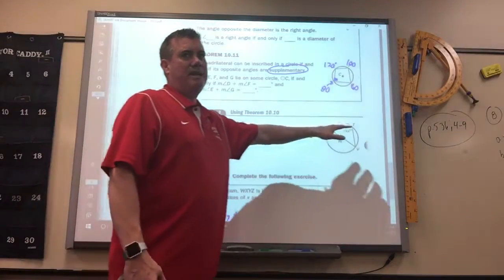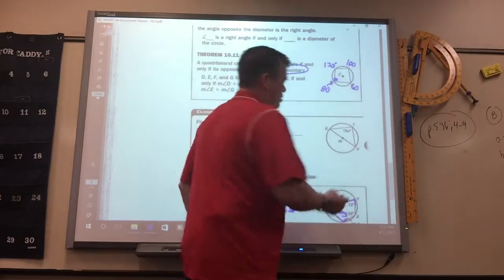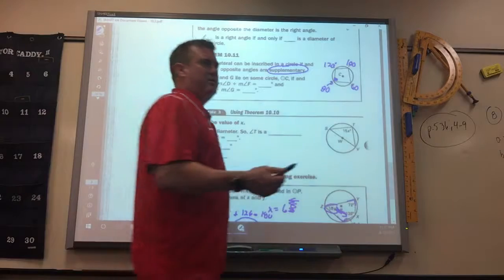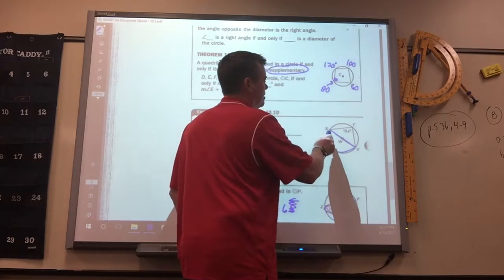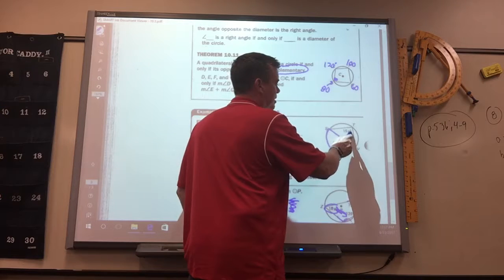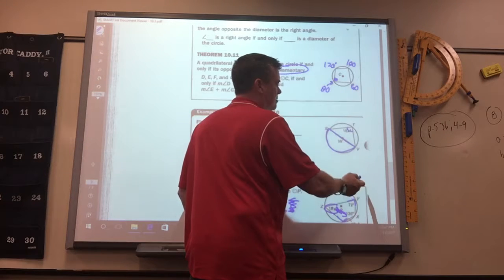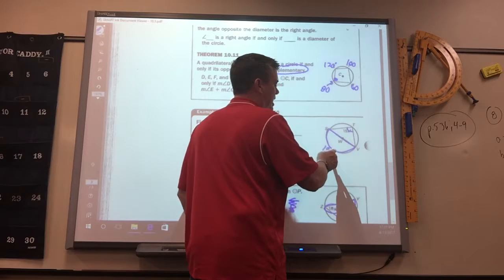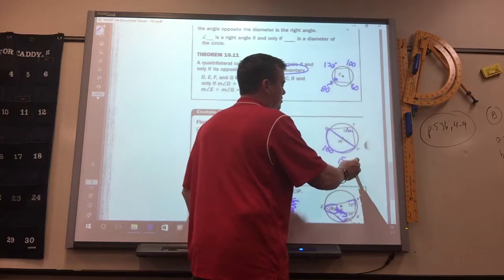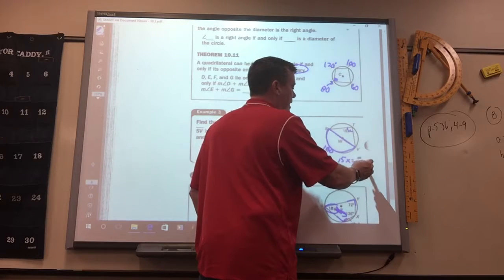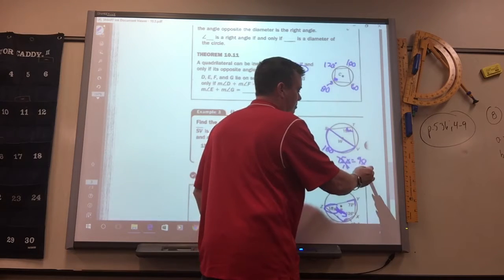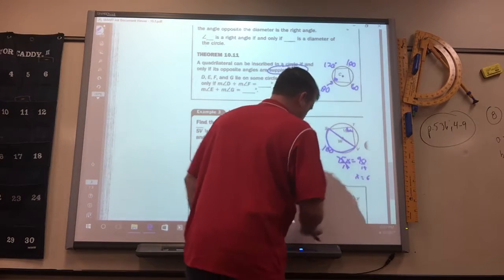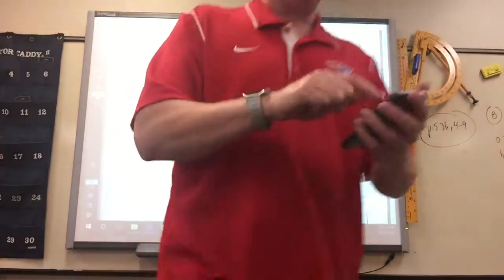On this one, in order to find X, this is what makes these a little hard, is you forget, since this is a diameter, this is 180, right? So what does this have to be? 90. Because if this is 180, this is 90. So 15X equals 90. Divide by 15, and you get 6. All right, we'll do a few of them.